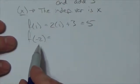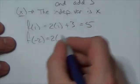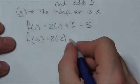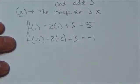The rule is multiply the independent variable by 2. Well, in this case, the independent variable value is negative 2. Add 3. So it's negative 4 plus 3. The answer is negative 1.